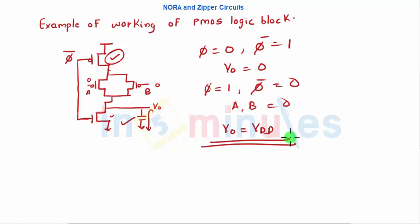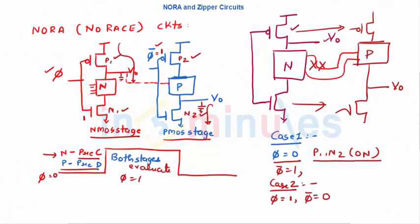What we could achieve here is we could eliminate our race condition. It's nothing but a NORA circuit where you don't need an external inverter like we need in case of domino circuits.